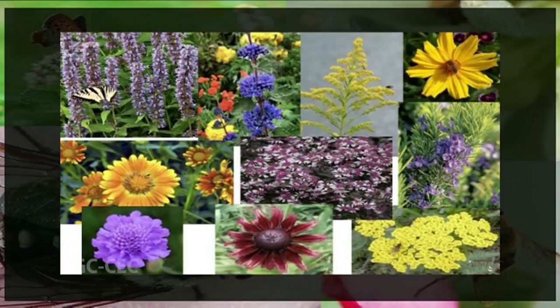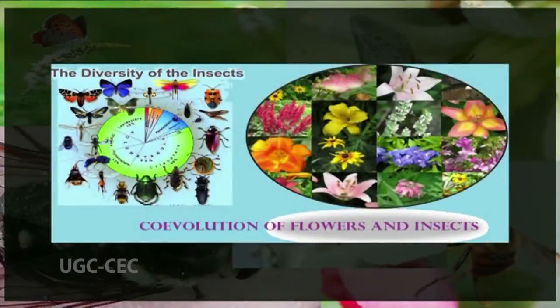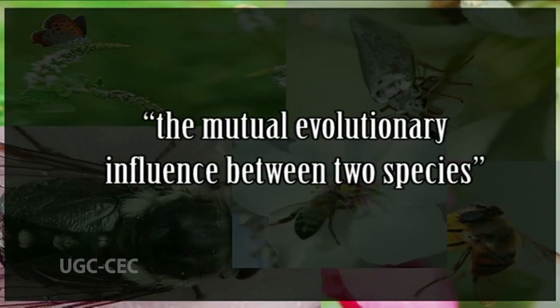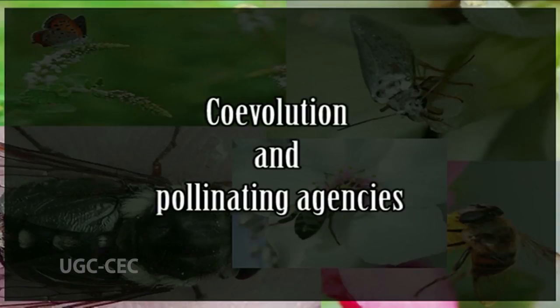The flowers of each species are modified in shape, structure, color, and odor to suit the particular pollinating agents on which they depend, providing a clear picture of the evolution of adaptedness. Evolving together, the plants and their pollinators become more finely tuned to each other's peculiarities, a process often termed co-evolution. In co-evolution, each of the species involved acts as a source of natural selective pressure on the other. Hence a more formal definition: co-evolution is the mutual evolutionary influence between two species.